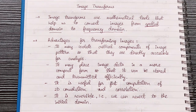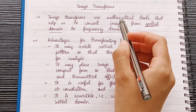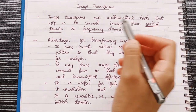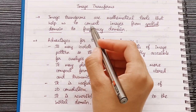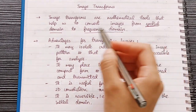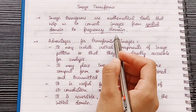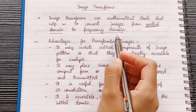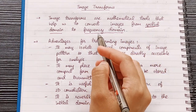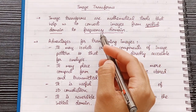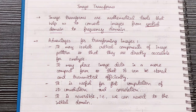Let's look at image transforms first. What are image transforms? They are basically mathematical tools that help us to convert images from spatial domain to frequency domain. Why converting images from spatial to frequency domain? It's because it makes many applications easier — it makes it easier to process images if they are in the frequency domain.